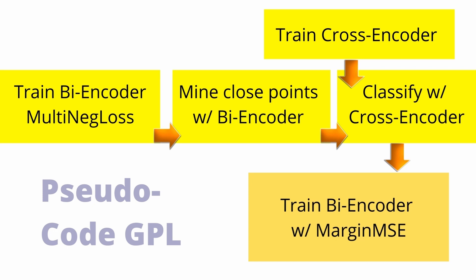That is it for today. This was the introduction video to this topic — you had a look at the code. Next time I will show you how, given your raw data, to prepare the specific dataset needed for the GPL methodology. That is the most complicated part — finding the right representation and the right parameters. We will also use some nucleus sampling methodology, but more about this in my next video.